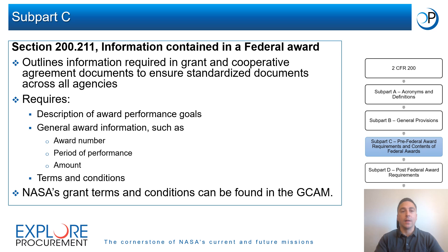To ensure standardized award documents, Subpart C Section 200.211 outlines all information that must be contained in grant and cooperative agreement documents, including a description of award performance goals, general award information, and terms and conditions. The full text of NASA's award terms and conditions can be found in the GCAM, Appendix D, titled Award Terms and Conditions, and Appendix E, which contains additional terms and conditions that apply to certain grants and cooperative agreements.